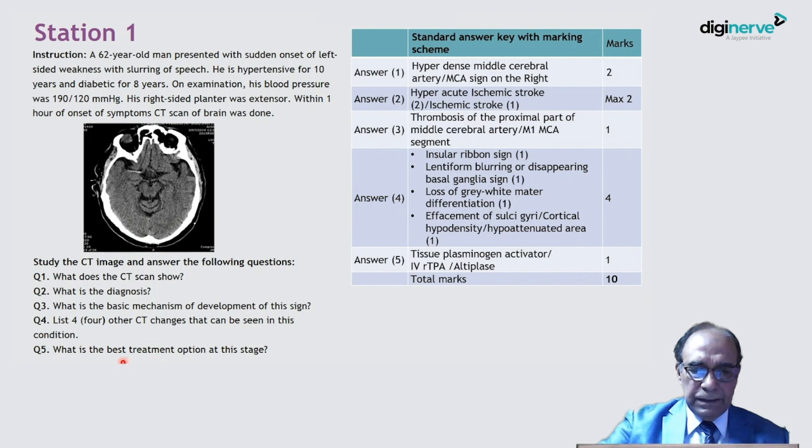What is the best treatment option at this stage? That means what is the best treatment option at the early ischemic stroke. So this is tissue plasminogen activator. This is the modern treatment for early ischemic stroke. Or you can write IV rTPA or you can write alteplase.